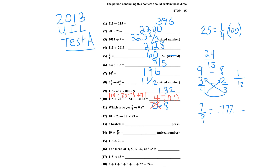Number 12: 40 times 23 minus 17 times 23. You can factor out a 23, leaving you 40 minus 17 times 23. That would be 23 times 23, which is 529 — 23 squared.